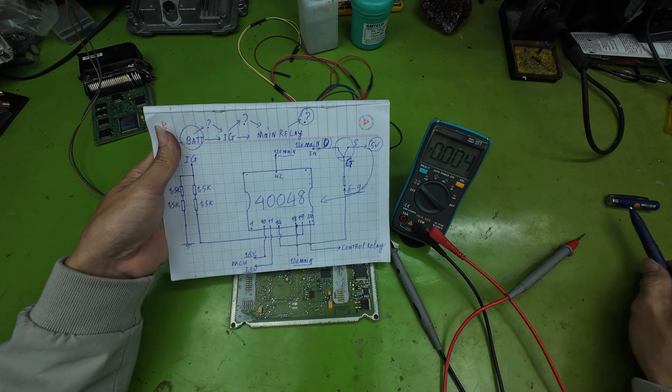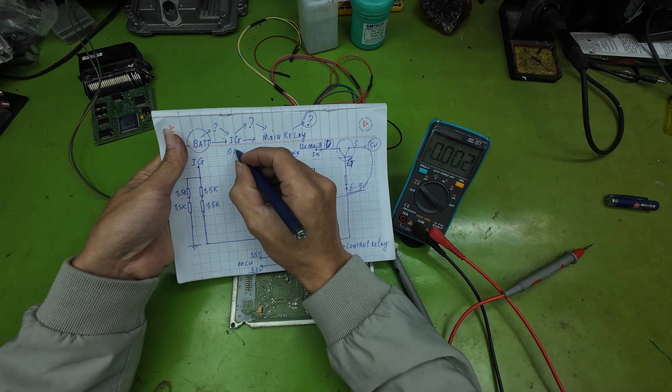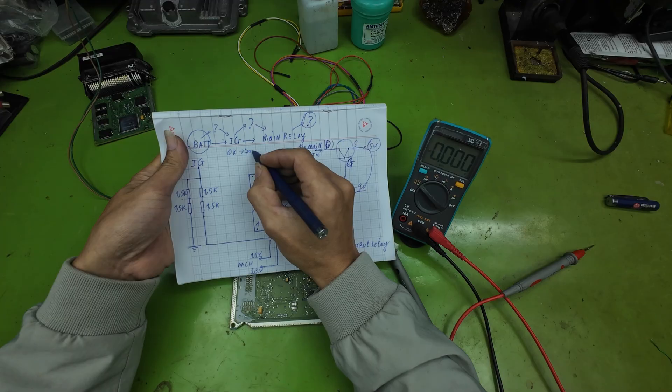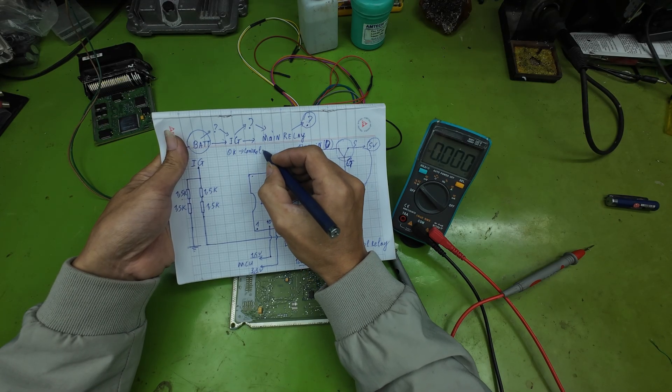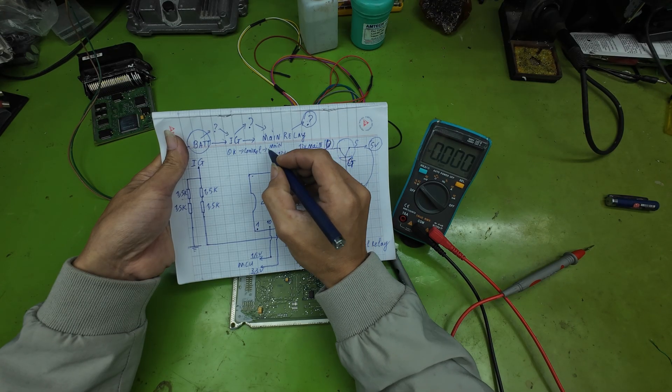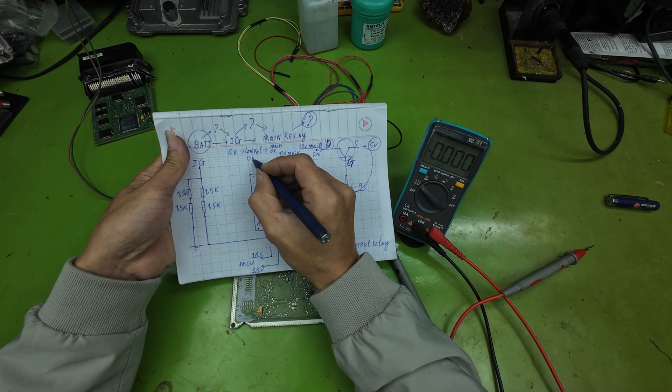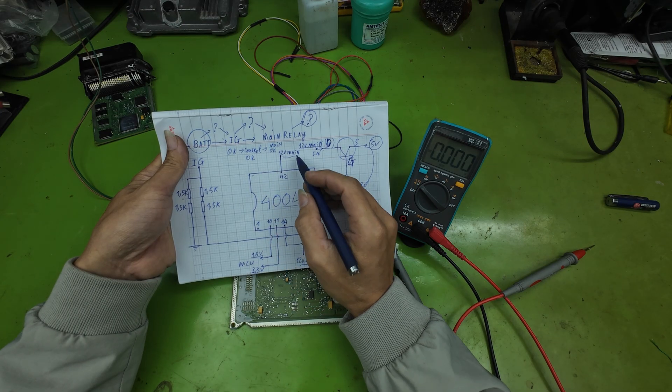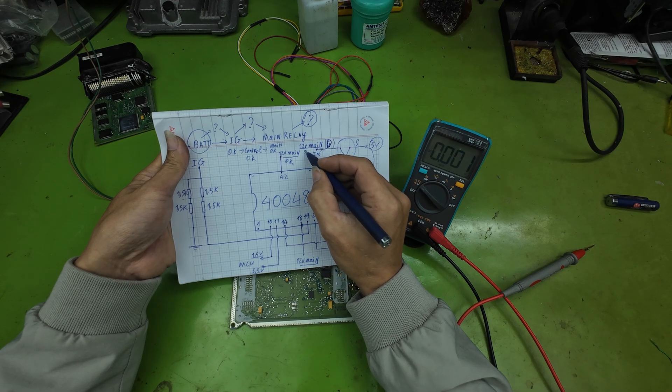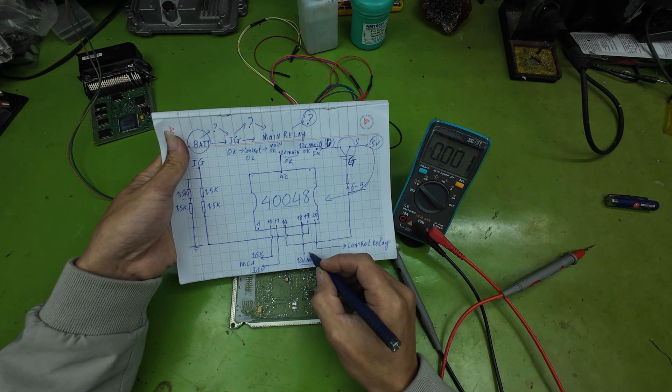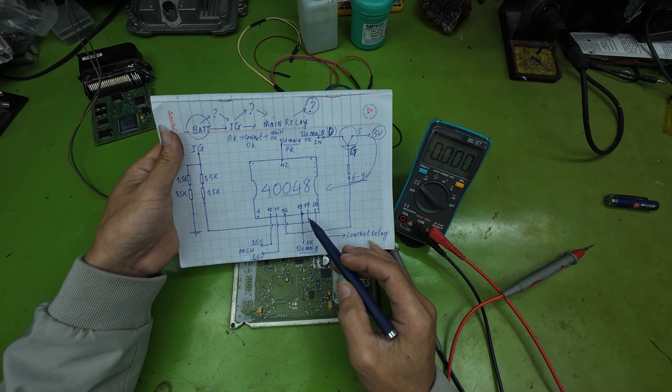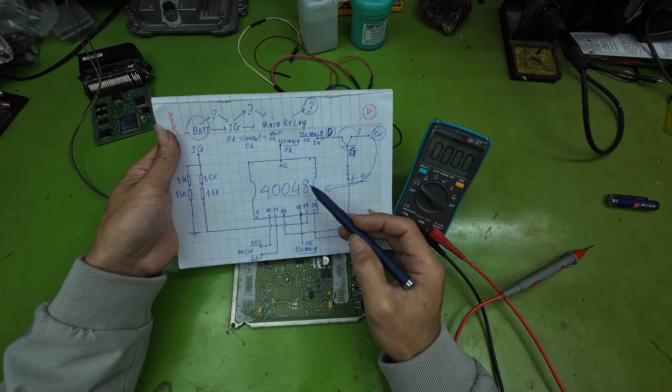This confirms that the IG power, the main relay control signal, and all post-relay supply voltages are in good condition. So what should we check next? Following the sequence after the main relay turns on, what should happen?